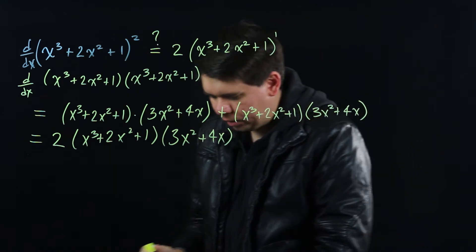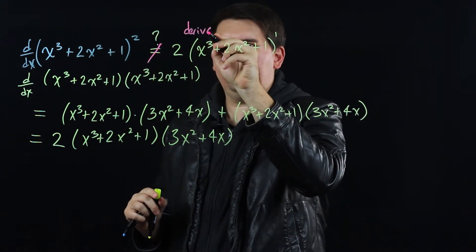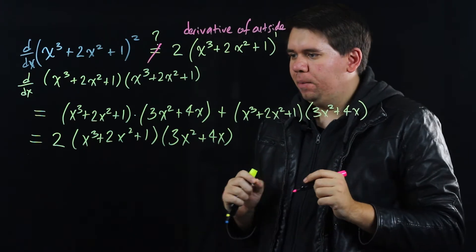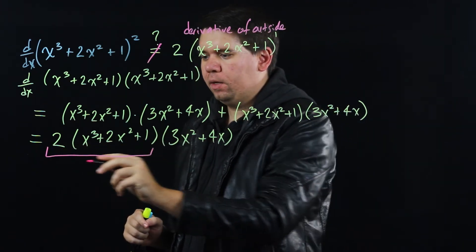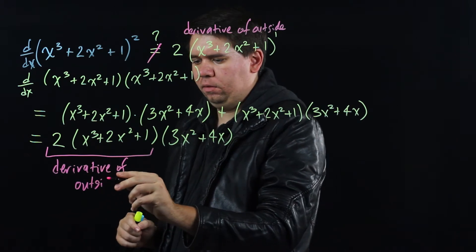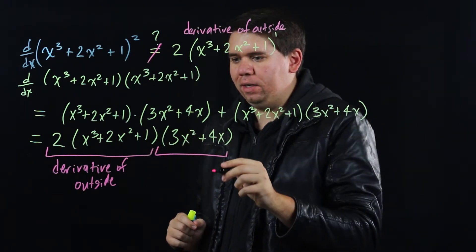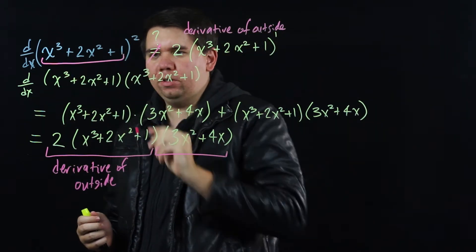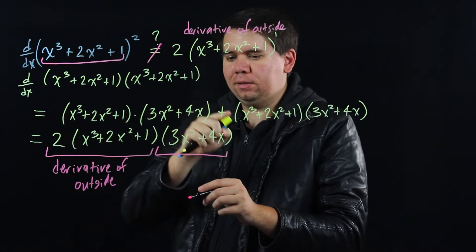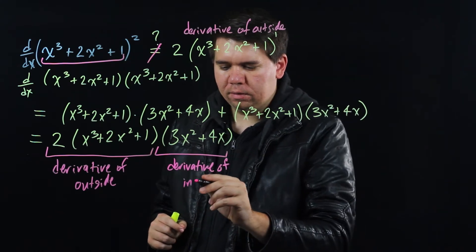So this original guess was wrong — it was close. Originally all we did was take the derivative of the outside function. But that's not quite enough, because in the final answer, although we have that piece — the derivative of the outside — we also have a second piece. And what is that second piece? It's exactly the derivative of the inside. The inside function has as its derivative: x cubed's derivative is 3x squared, 2x squared's derivative is 4x, and the derivative of 1 is 0. So this is exactly the derivative of the inside.